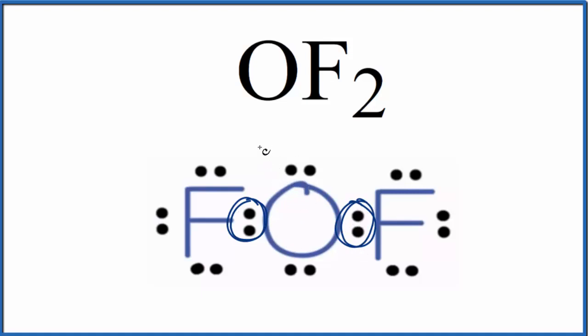A lone pair, that's not bonded to another atom. So we have one here and another one here on the oxygen. So we have one, two lone pairs. So, two bonding pairs, two lone pairs.